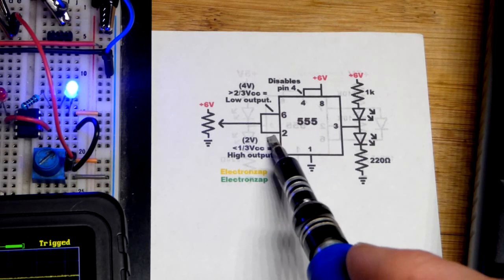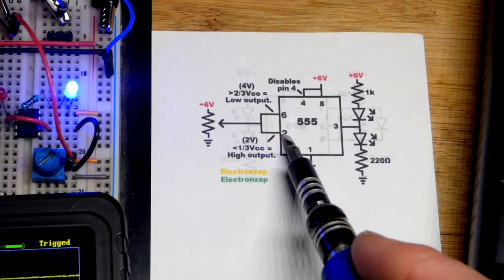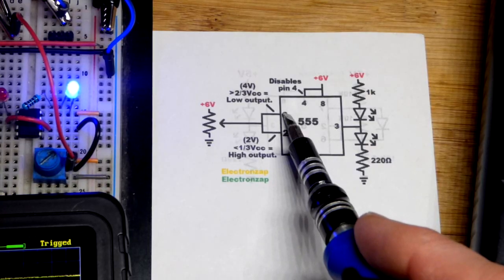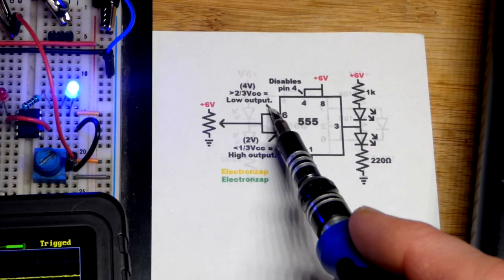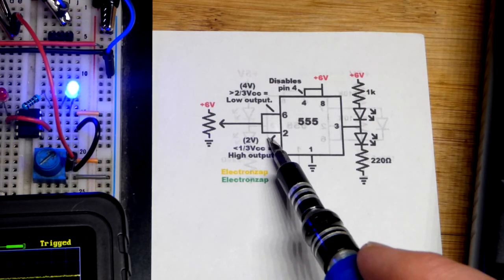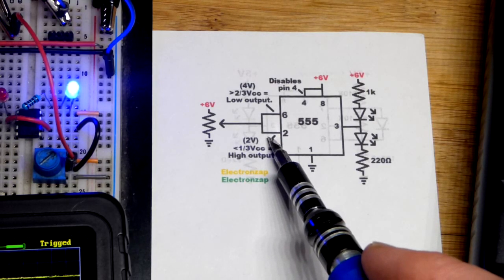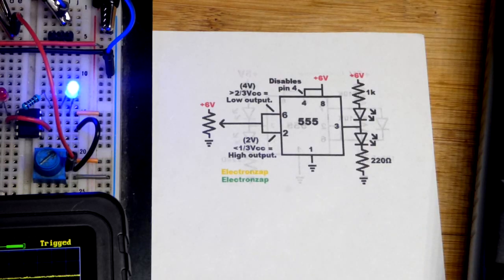A 555 timer can be used as an inverter. You tie the trigger pin and the threshold pin together. When you get more than two-thirds of the supply voltage, that'll set the output low. When you get less than one-third of the supply voltage, that will set the output high. Between those two points, the output will stay in whatever state it was last put into.